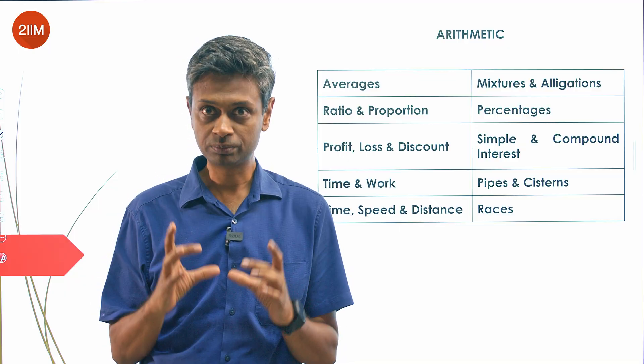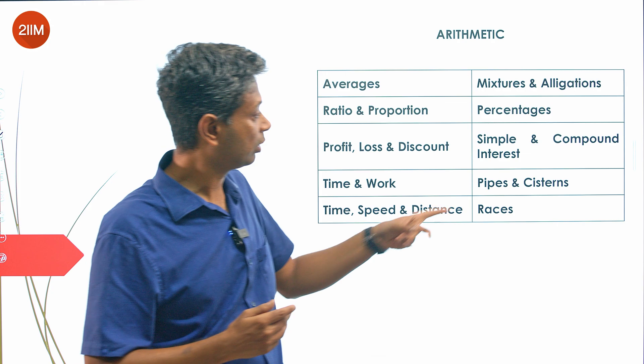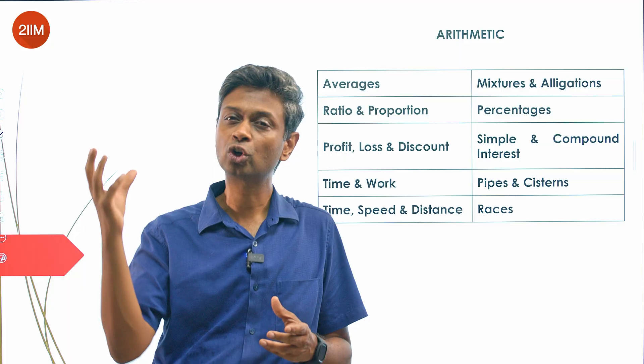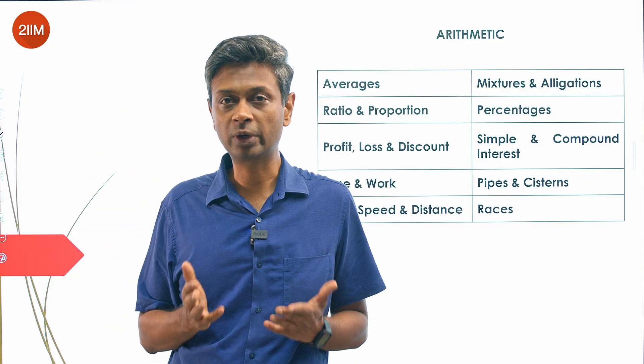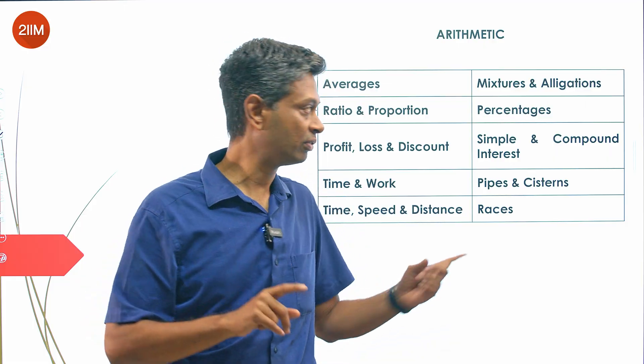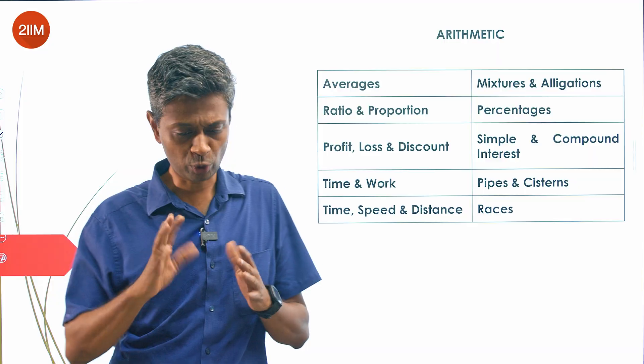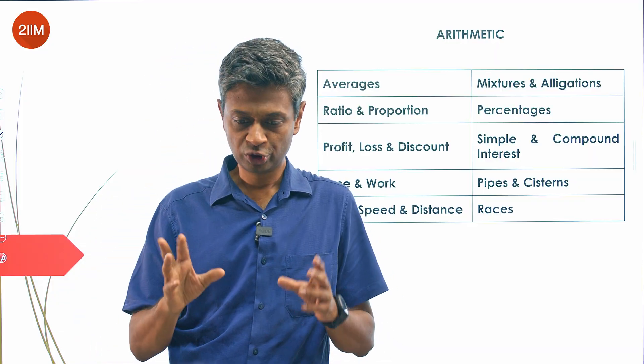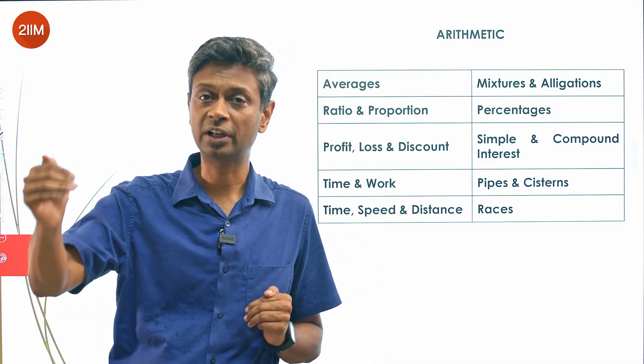Arithmetic sets the tone. Algebra sits on top of this. You may get some questions using pipes and cisterns with P and Q which can be classified as algebra layered on arithmetic. Even if you know x squared minus y squared equals x plus y times x minus y, if you don't know the fundamentals of pipes and cisterns, you can't attempt that question. This sets the tone.